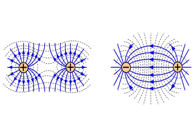To answer this, consider two pictures: one with two positive charges and one with two opposite charges. When you have two same charges, whether positive or negative, you will have a certain pattern in equipotential lines. This pattern reminds me of a peanut — my students say it looks like a peanut.